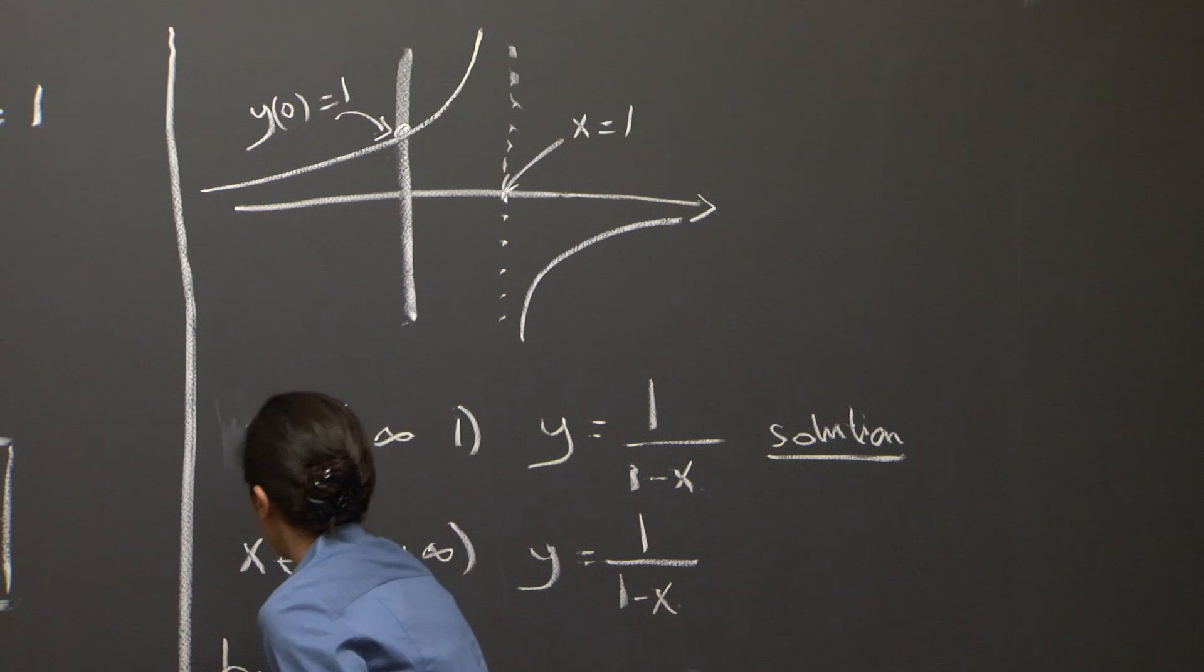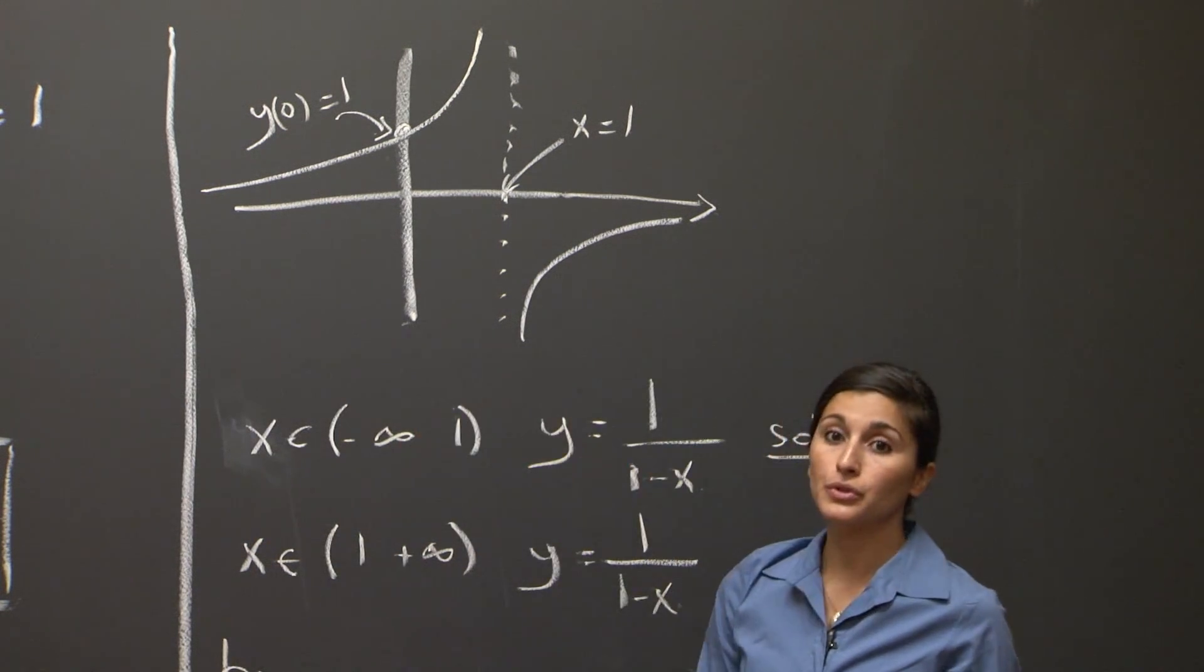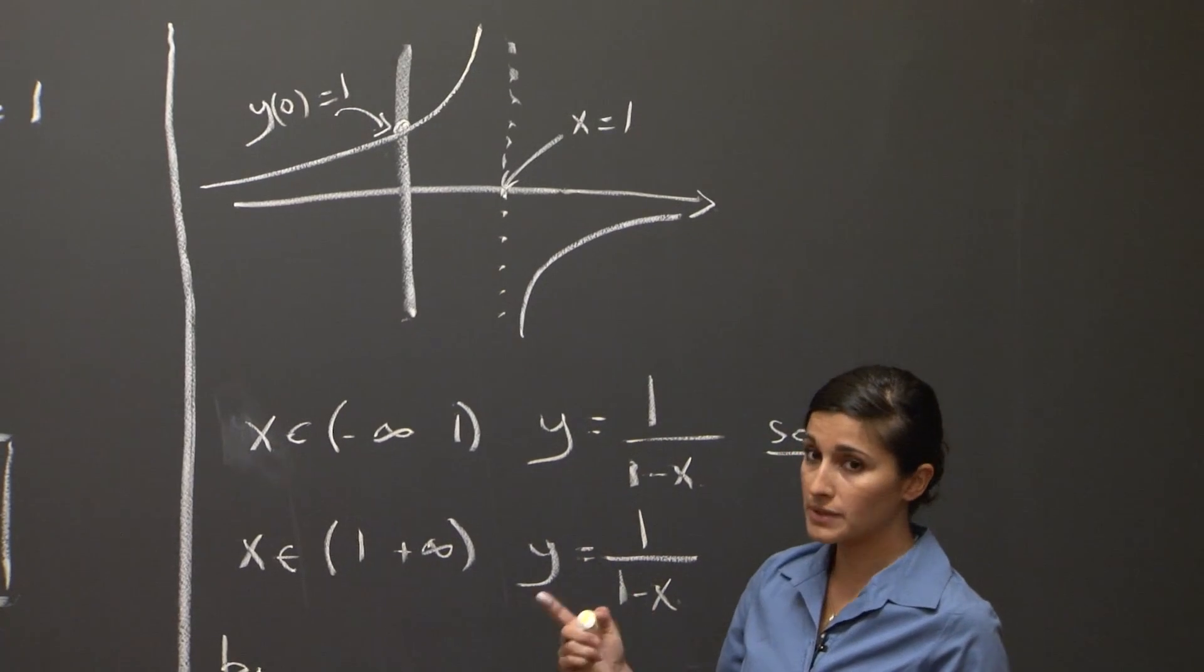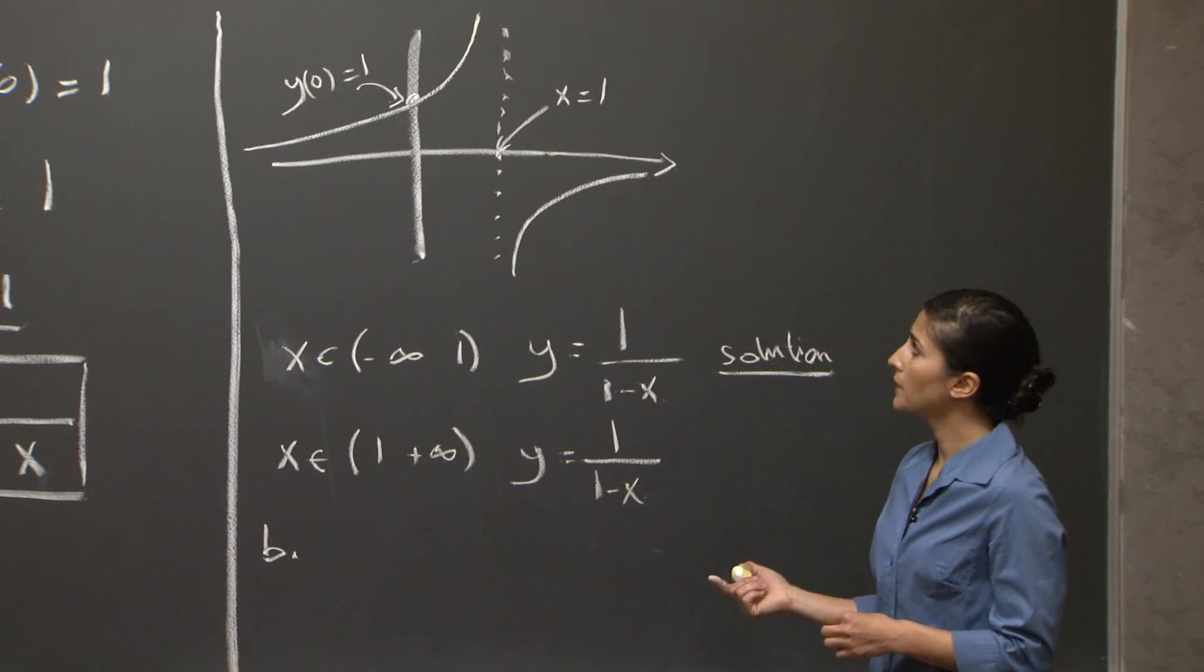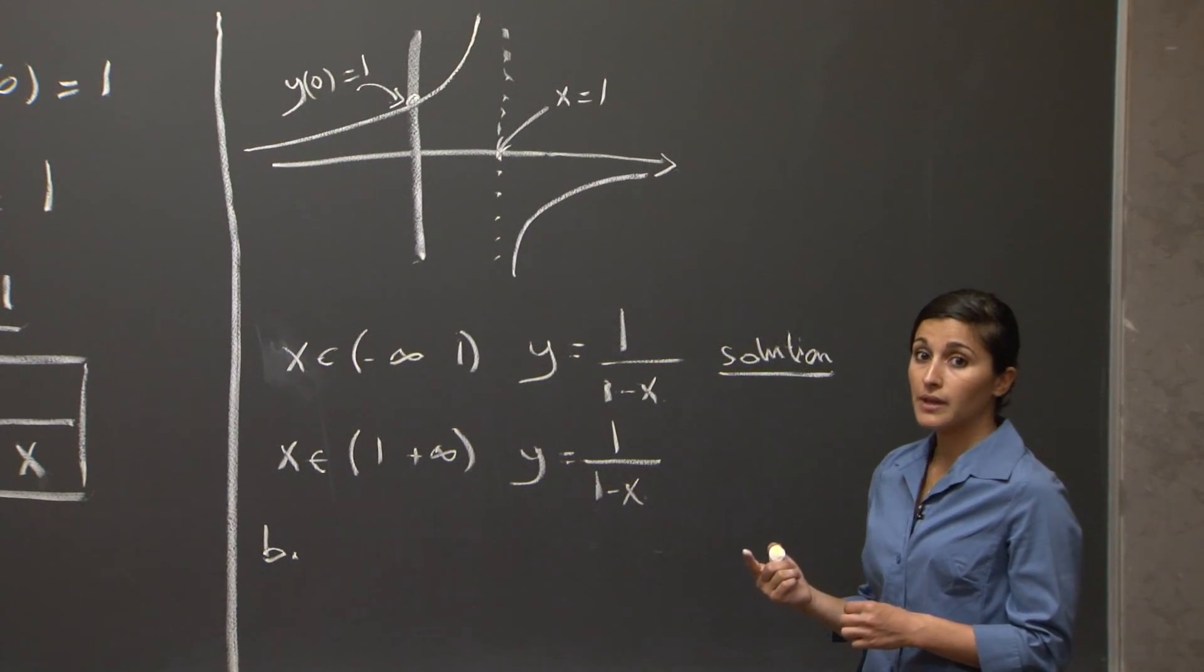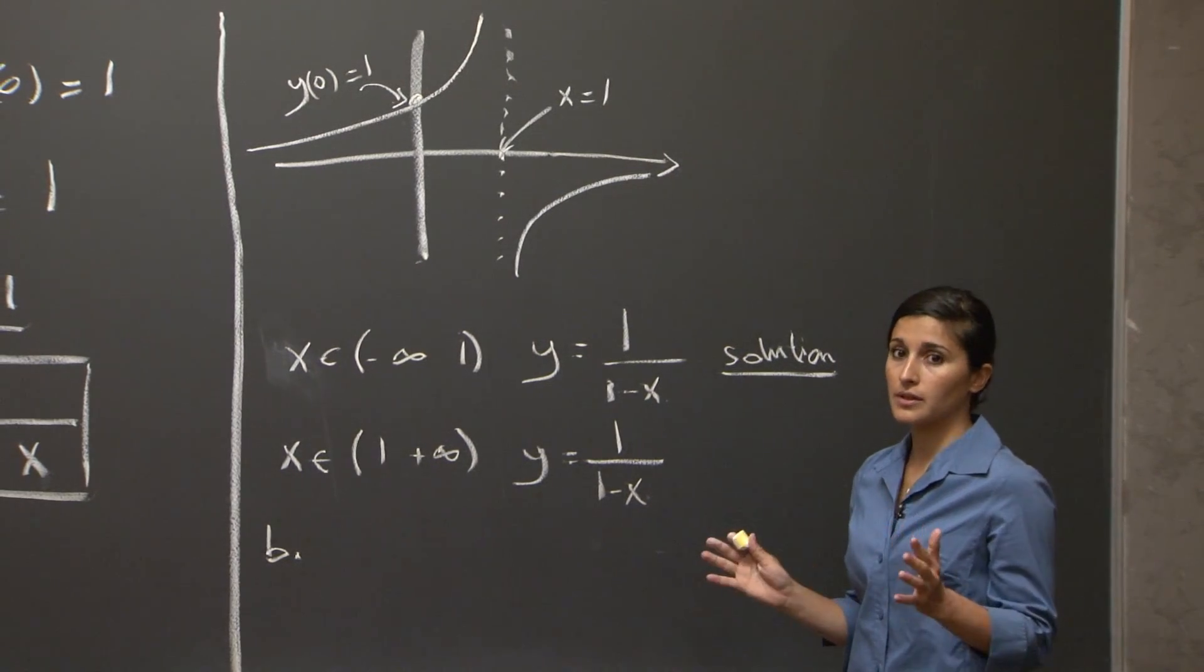Now, if we move on to the solution of the second part of the problem B, we were asked to find the general solution of the problem, which means that we need to account now for all the solutions regardless of their initial condition.